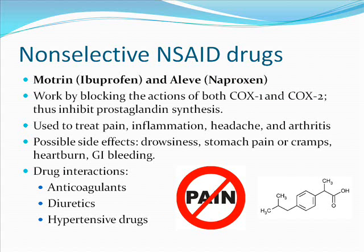Non-selective NSAID drugs such as Motrin, ibuprofen, and Aleve naproxen work by blocking the actions of both COX-1 and COX-2, thus inhibiting prostaglandin synthesis. They are used to treat pain, inflammation, headache, and arthritis. Possible side effects include drowsiness, stomach pain or cramps, heartburn, and GI bleeding. Drug interactions occur with anticoagulants, diuretics, and antihypertensive drugs.